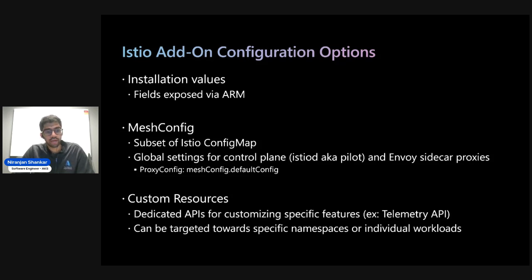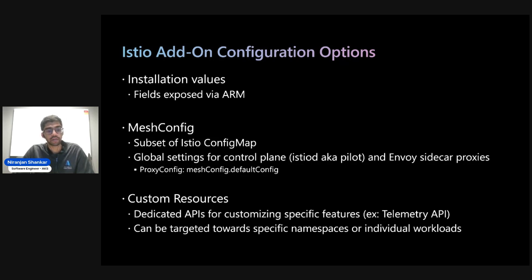The third way is through custom resources — dedicated APIs for customizing specific features. For example, observability in the mesh would be configurable through the telemetry API, and for outbound traffic you would use service entries, virtual services, and gateways. The main difference is that these are dedicated APIs for specific purposes, and you can also target them towards specific namespaces or individual workloads.